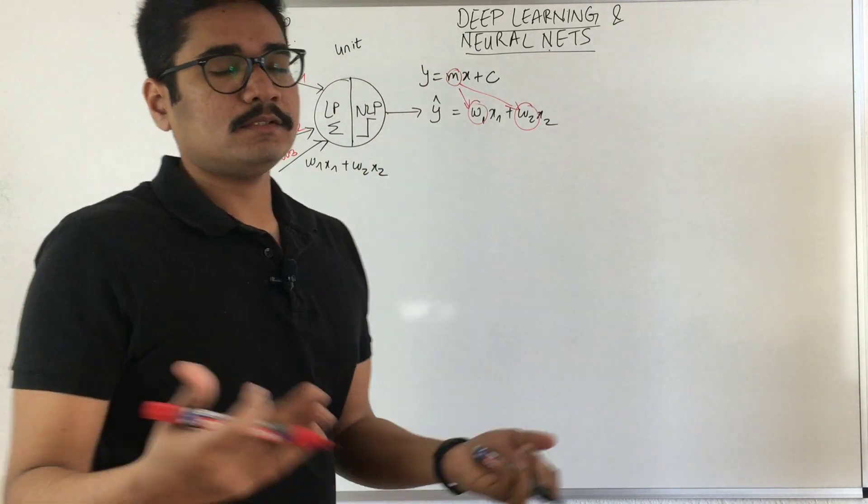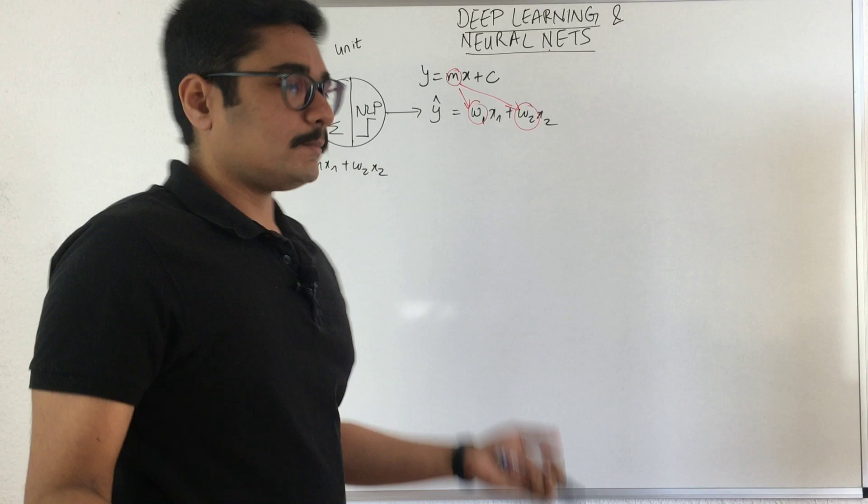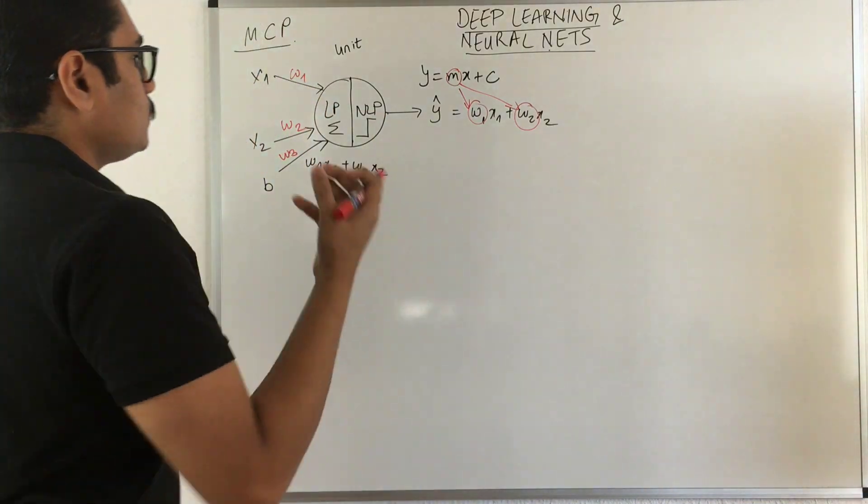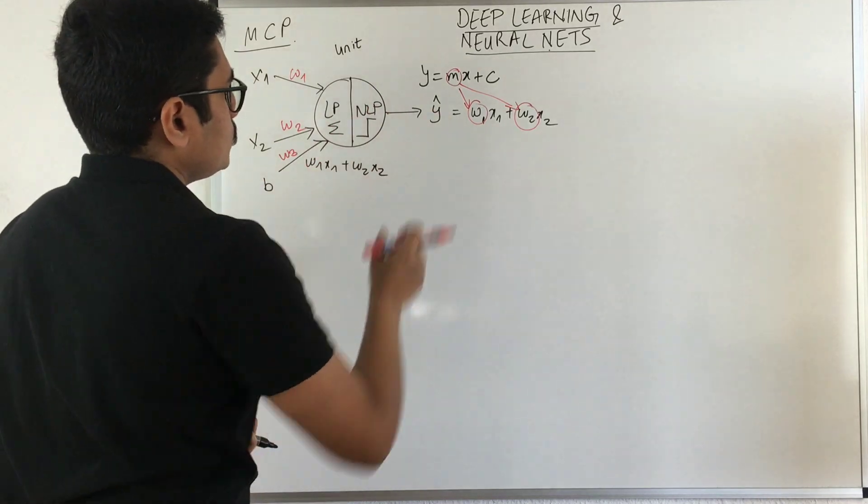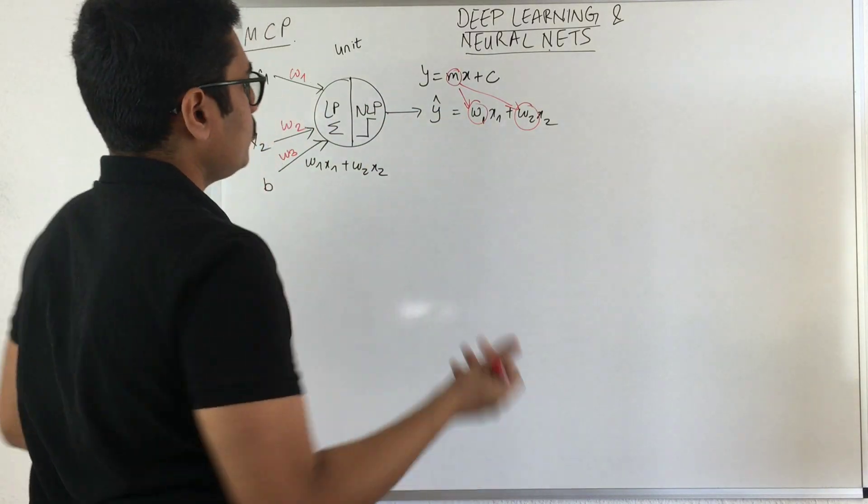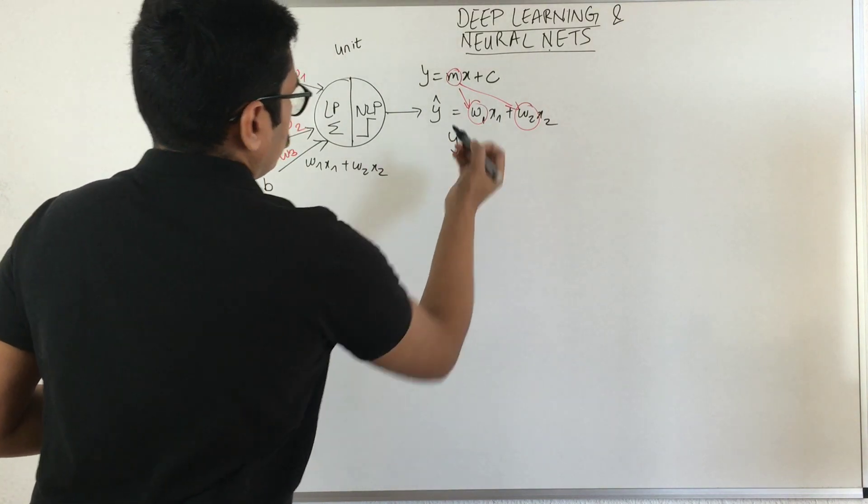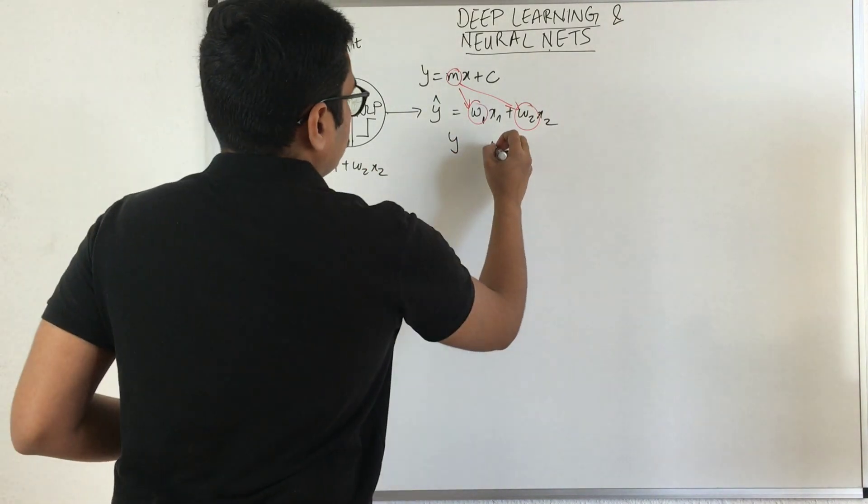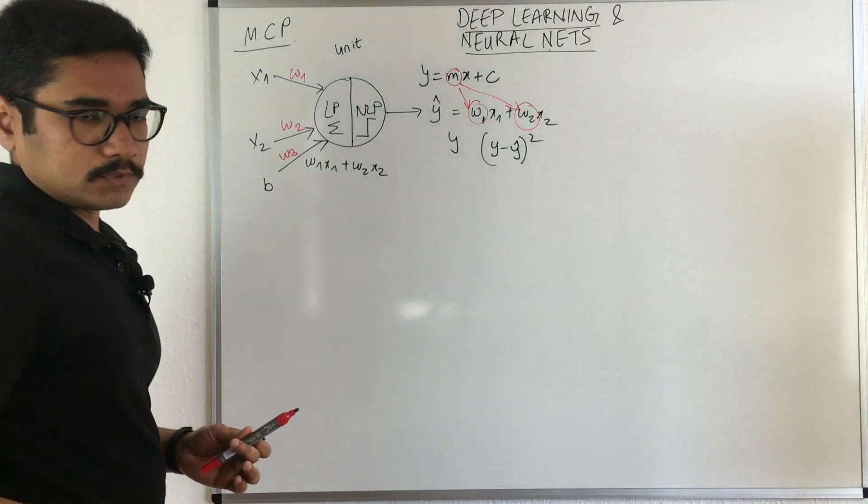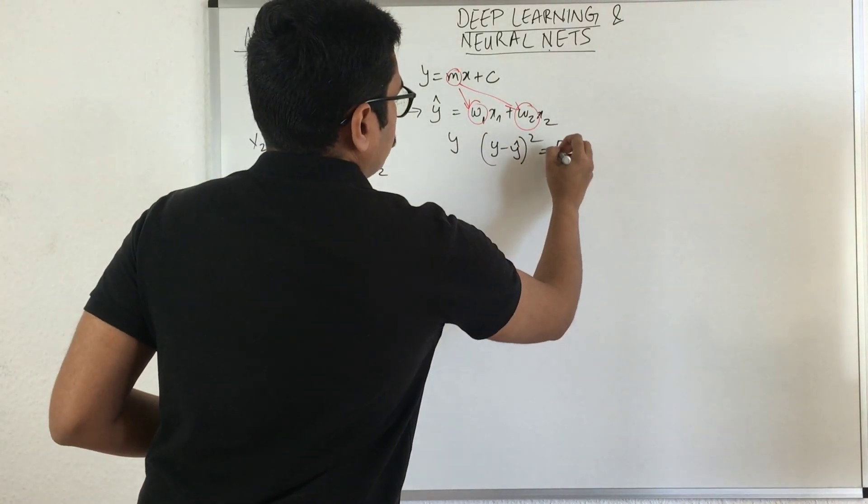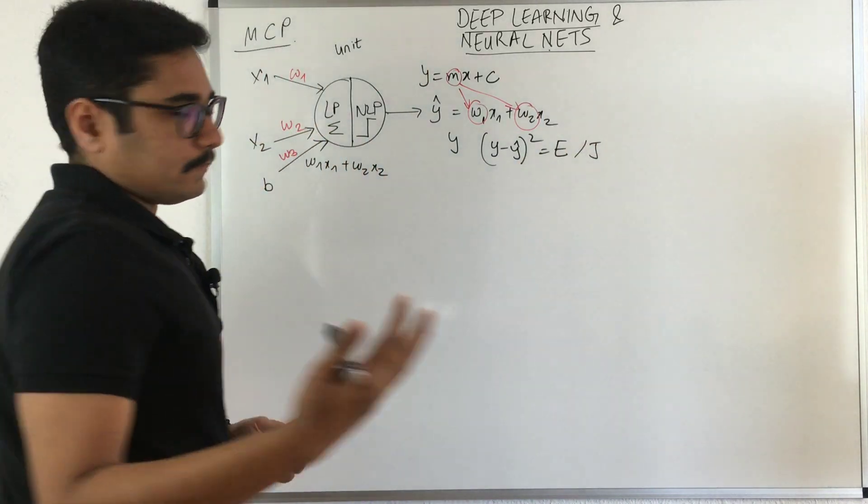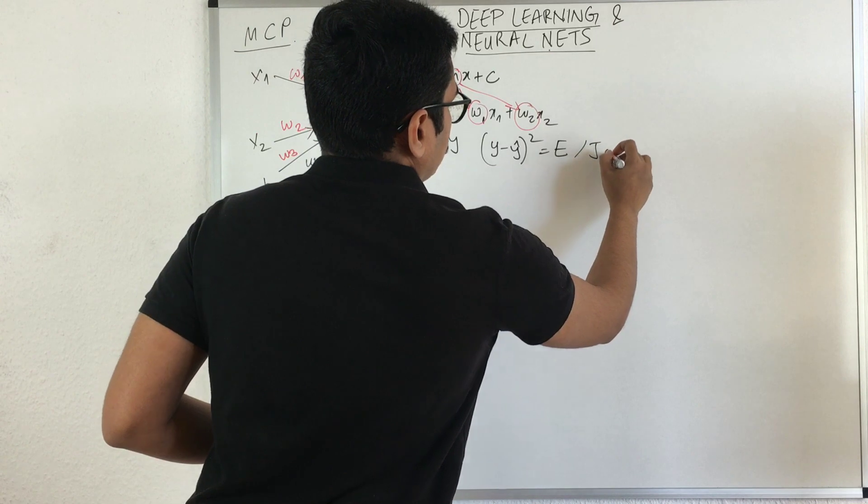With this, you get an output called Y predicted, and then you have the actual output Y. You calculate Y minus Y predicted squared, the sum of squared errors. That gives your error, or it's also written as J, that is the cost. This J stands for Jacobian.